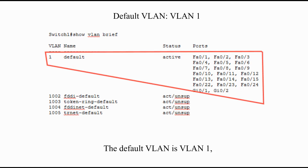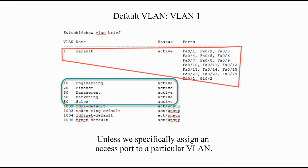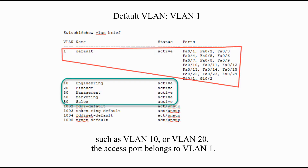The default VLAN is VLAN1, a default setting on Cisco switches and most other vendors. Unless we specifically assign an access port to a particular VLAN, such as VLAN10 or VLAN20, the access port belongs to VLAN1.